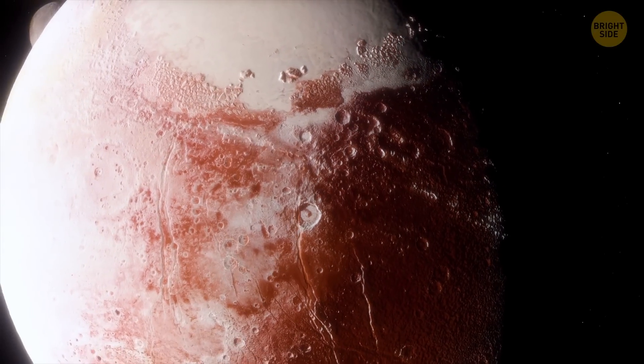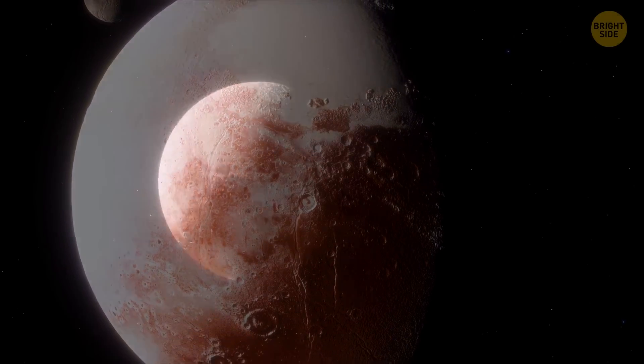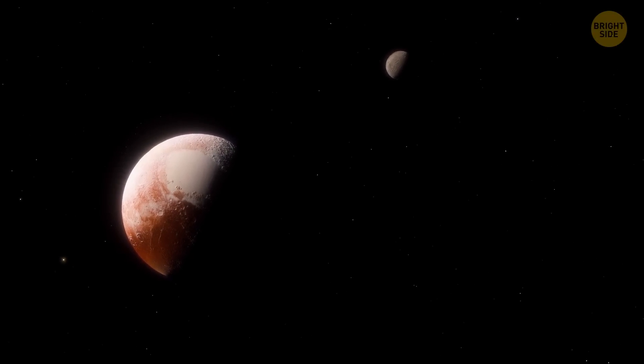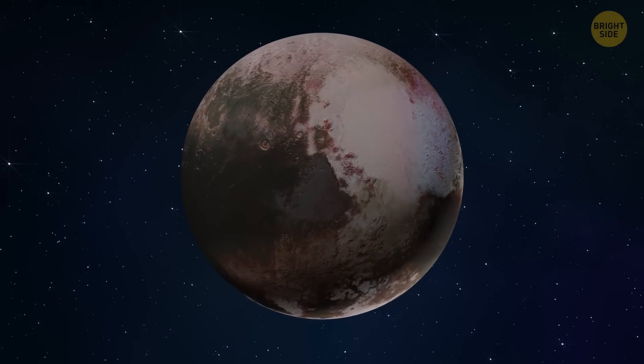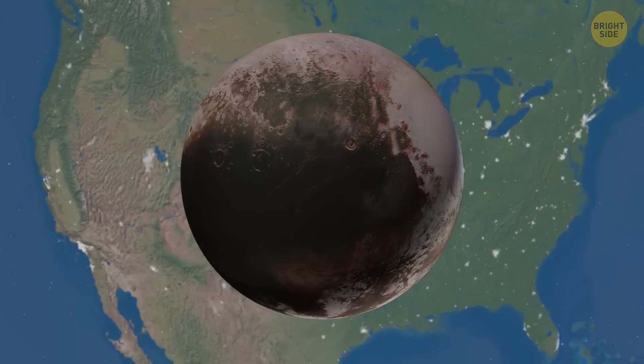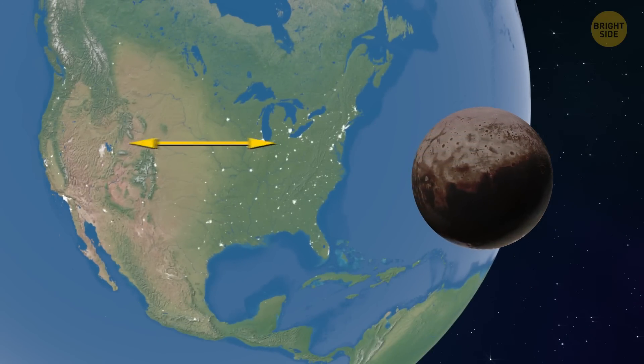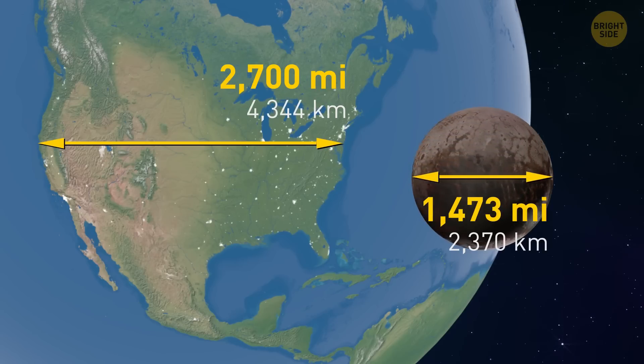As you may remember, Pluto used to be a planet but was stripped of this title in 2006, then reclassified as a dwarf planet. But the most unexpected fact about this celestial body is that its diameter is smaller than that of the U.S. The greatest distance across the country, from Maine to Northern California, is about 2,800 miles. As for Pluto, it's only 1,473 miles across.